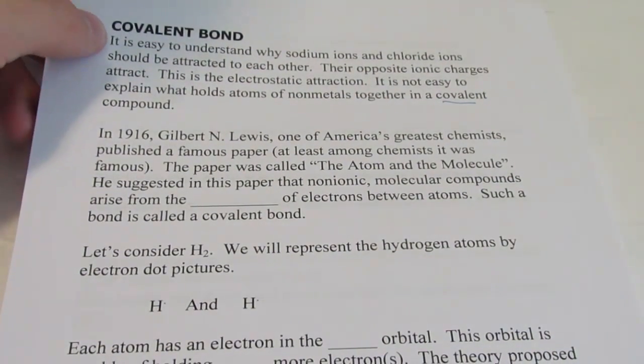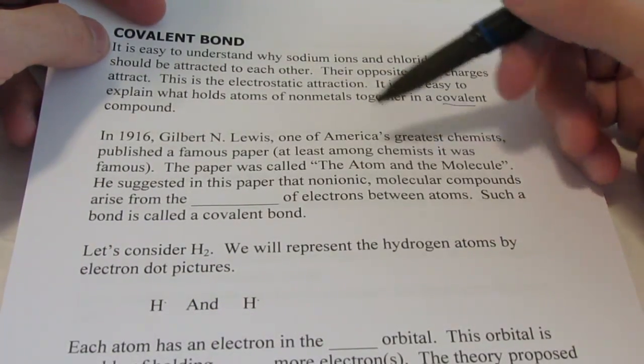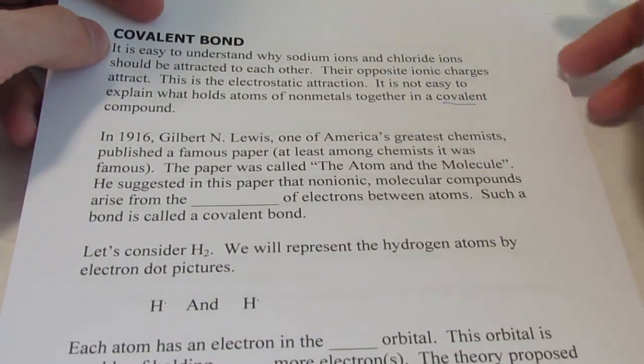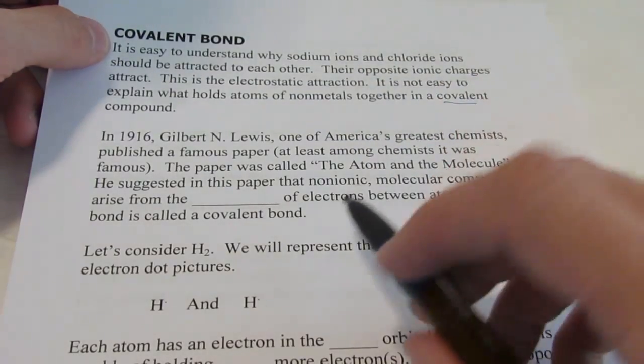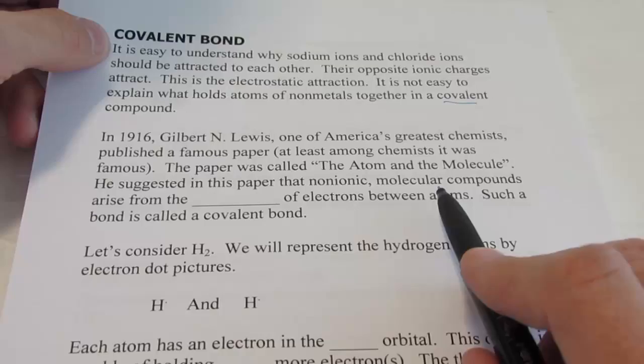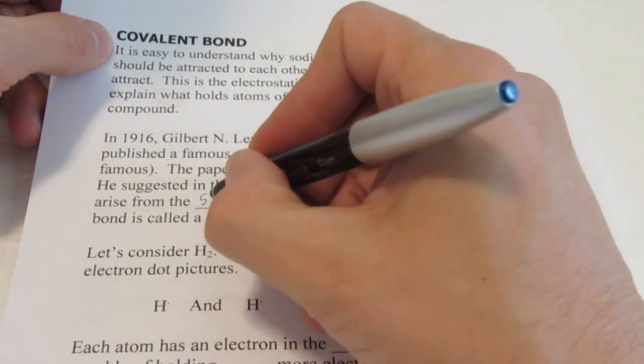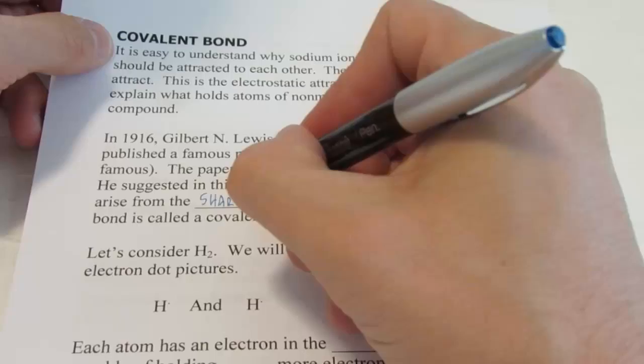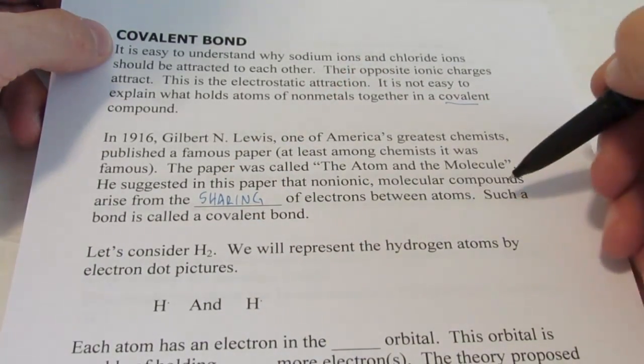In 1916, a guy named Gilbert N. Lewis, one of America's greatest chemists, published a famous paper. That paper was called The Atom and the Molecule.